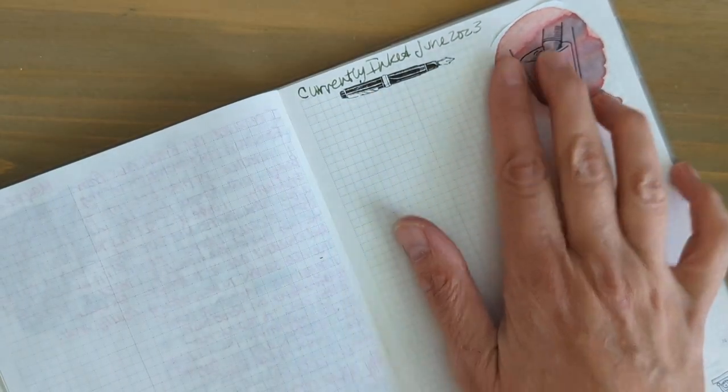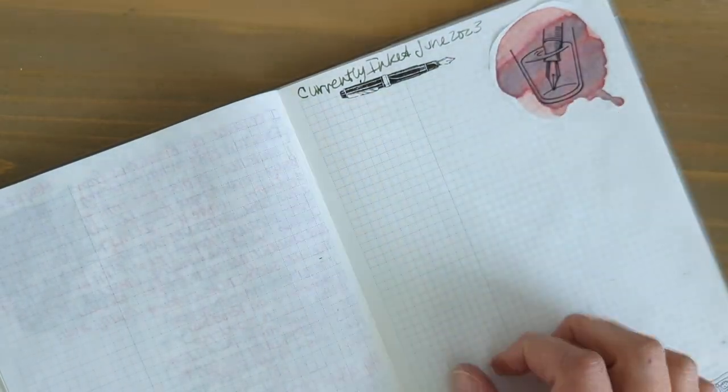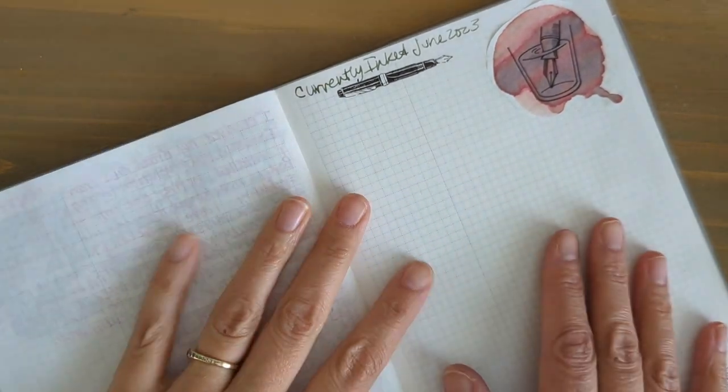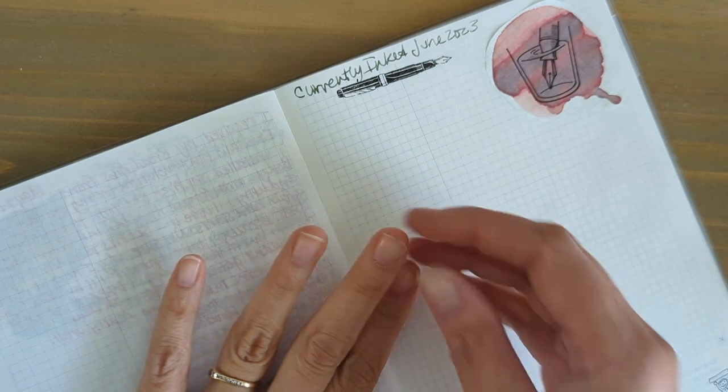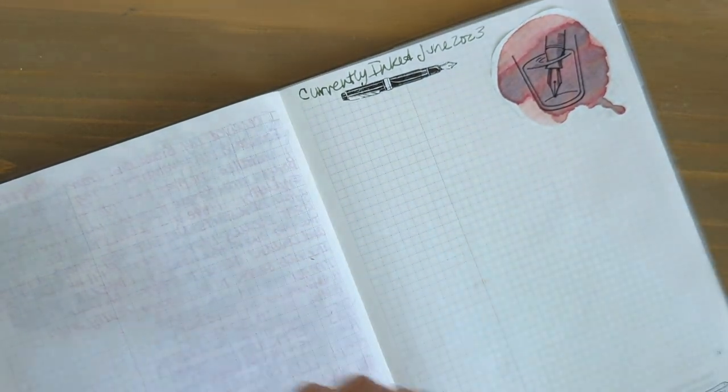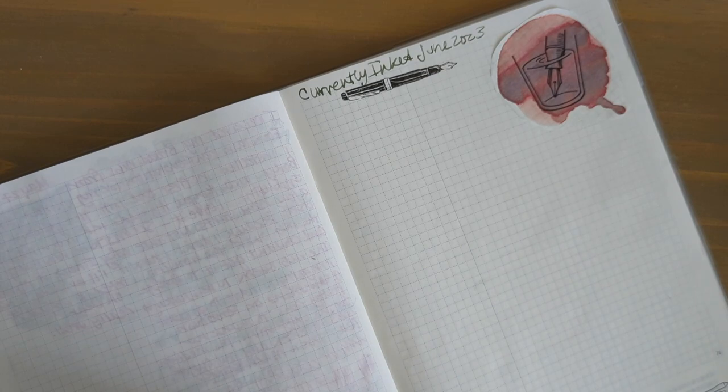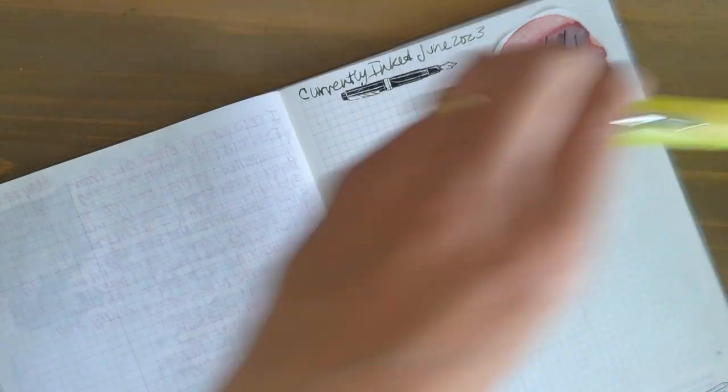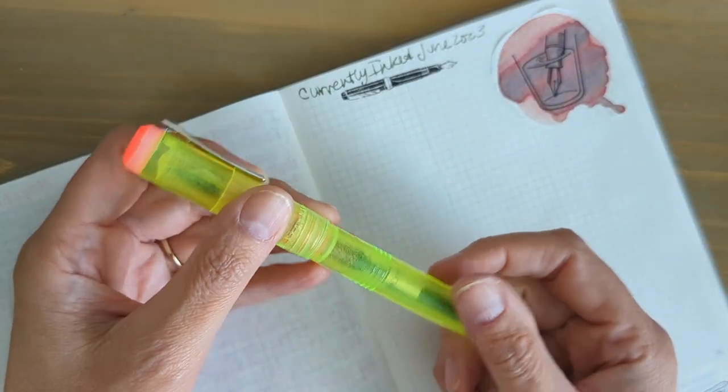These are my pens that I've inked for June. At this point I will probably run the ink out and then not refill them. I'll have a new batch of pens probably in a couple of weeks. I'll just go in no particular order.